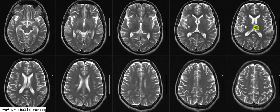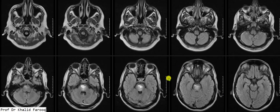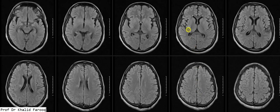Here we have axial images of the FLAIR sequence. We can see abnormal signals in the central portion of the pons, consistent with pontine hemorrhage, and old ischemic changes noted in the posterior portion of the right basal ganglia.